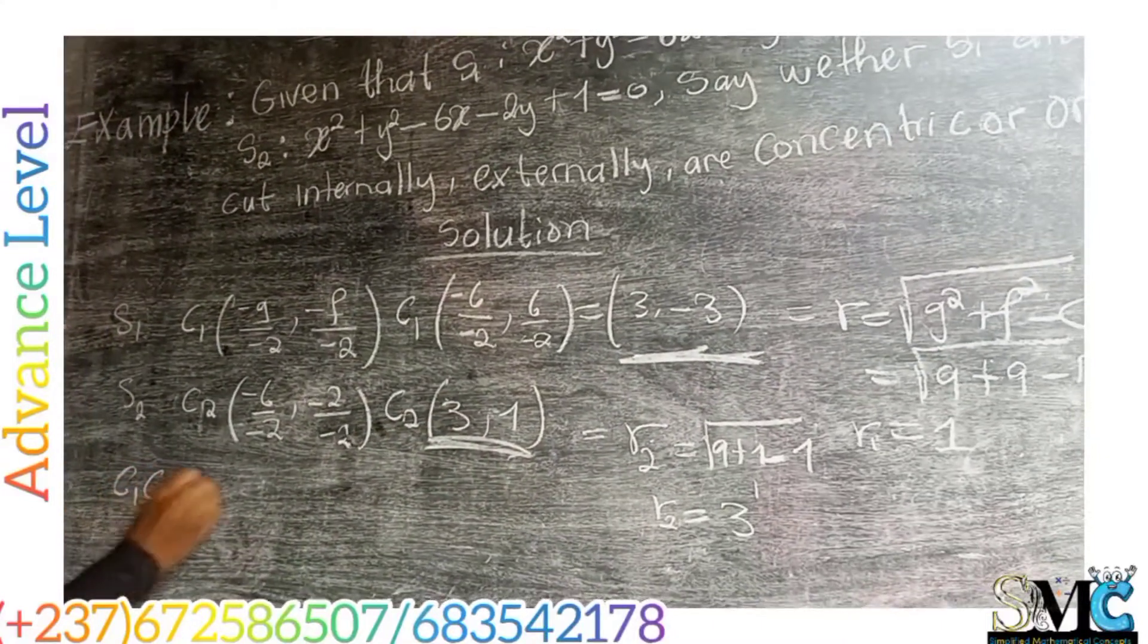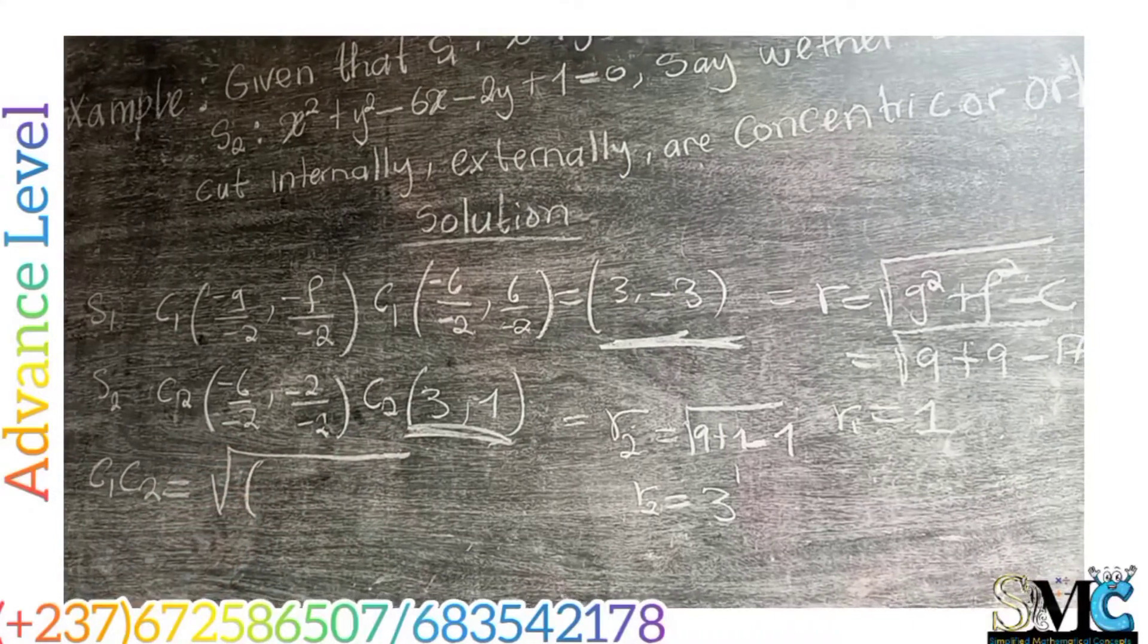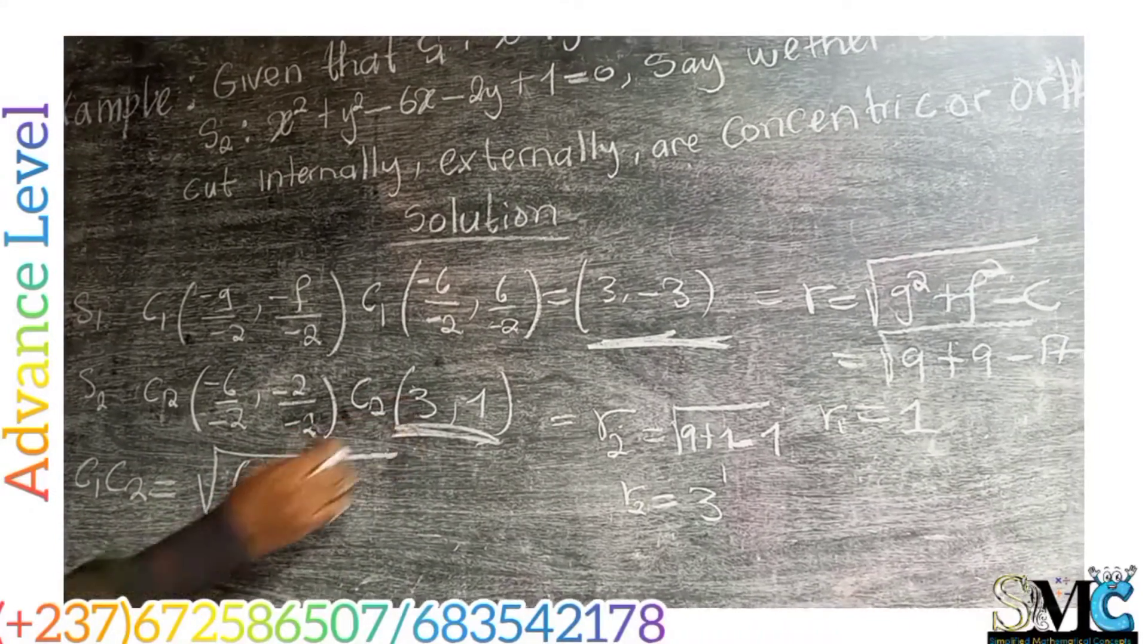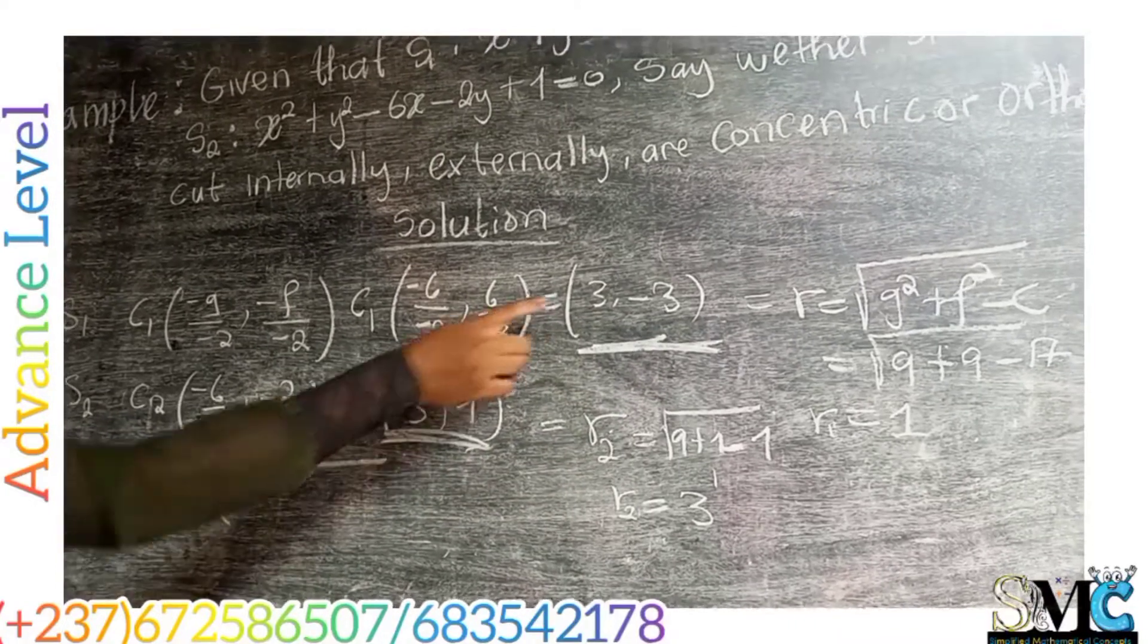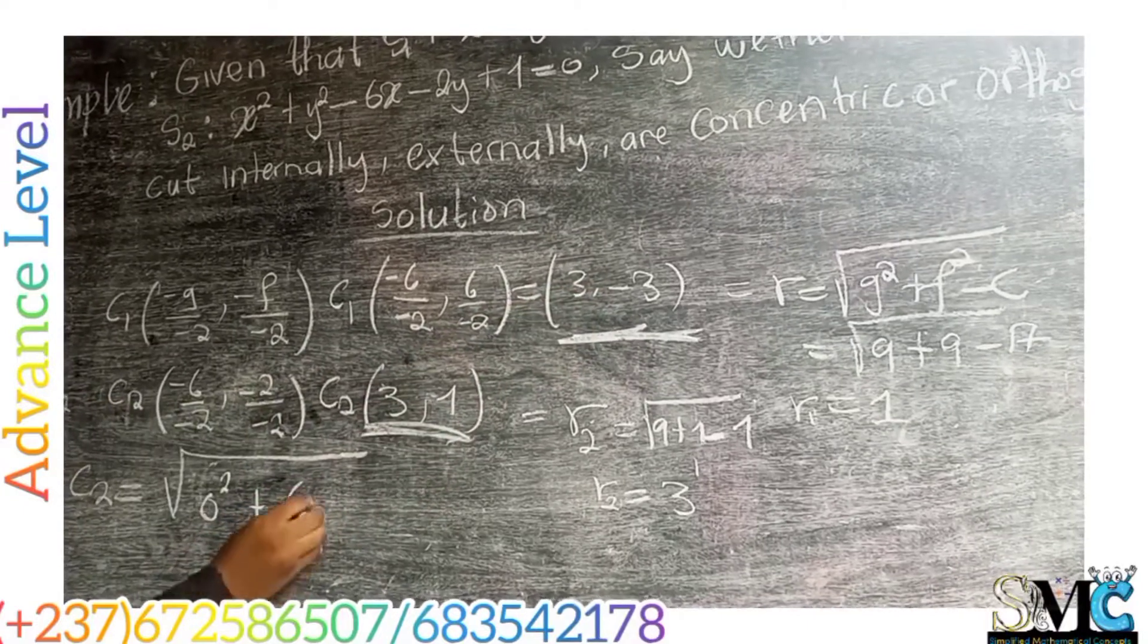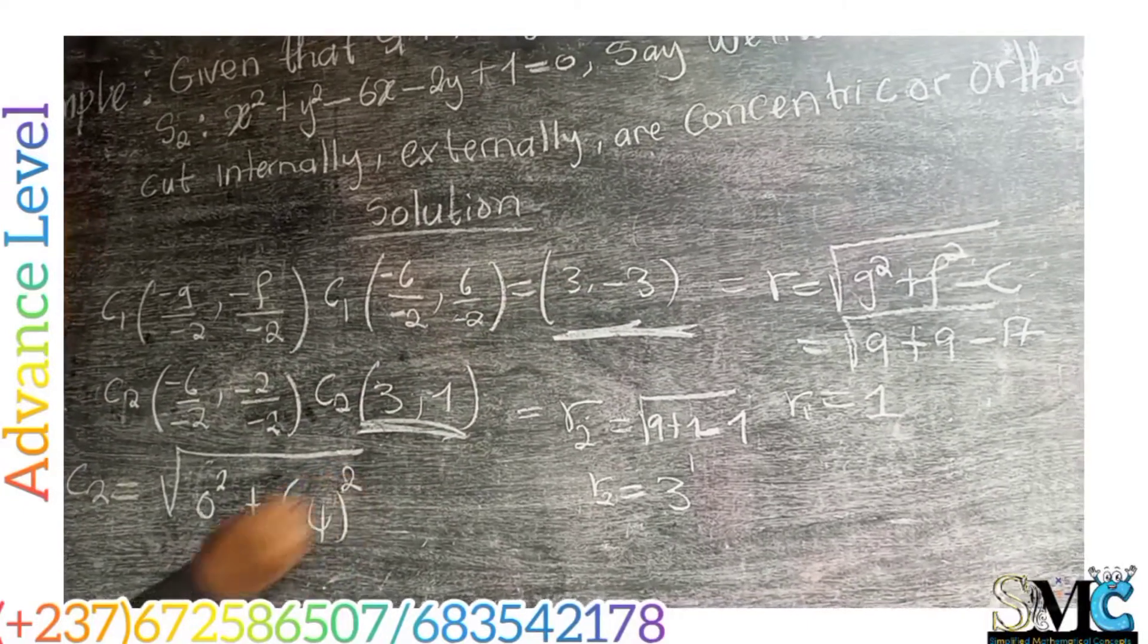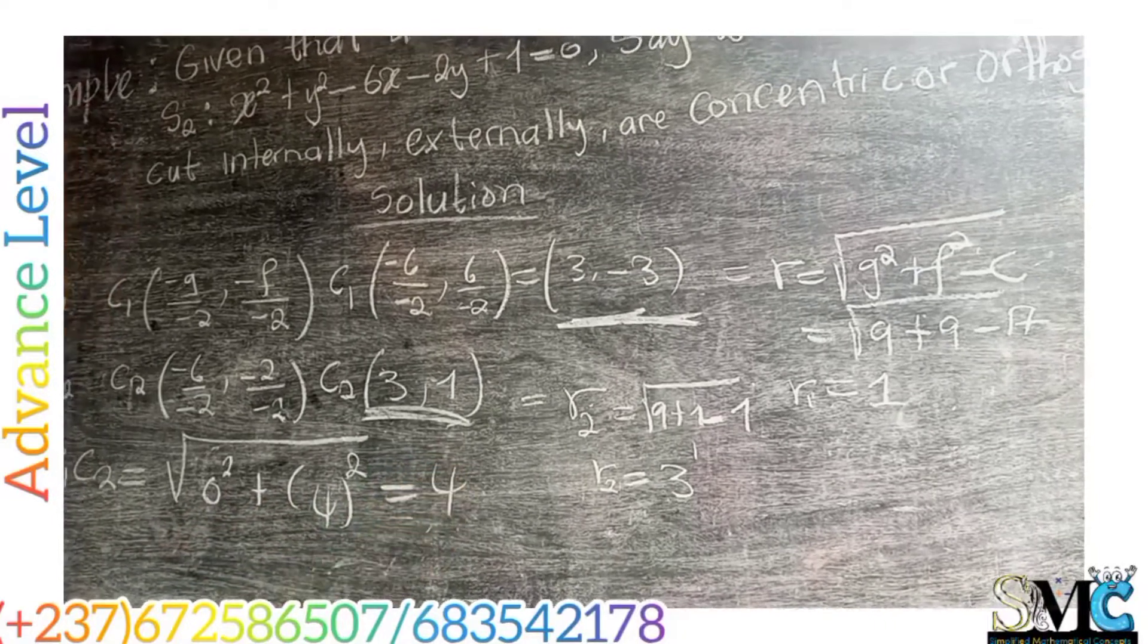So C1, C2 is simply equal to the square root of applying the formula for the distance between two points. This is the first point and the second point. So we have 3 minus 3, which is 0 squared plus 1 minus this, which gives us 4 squared, implying that the distance C1, C2 is equal to 4.